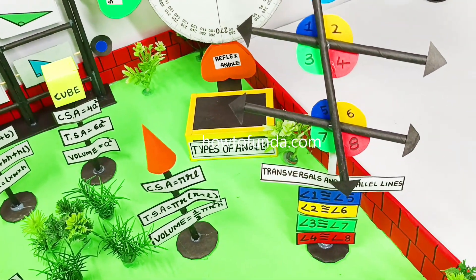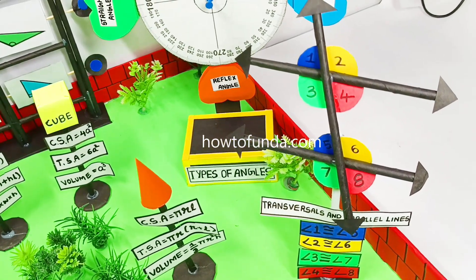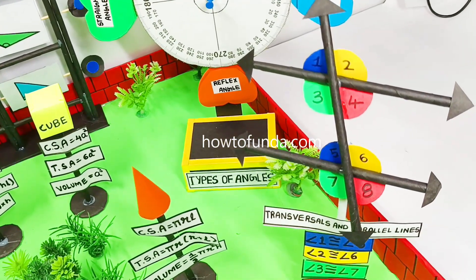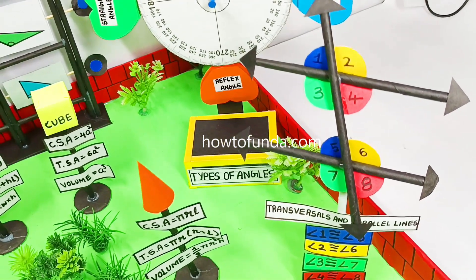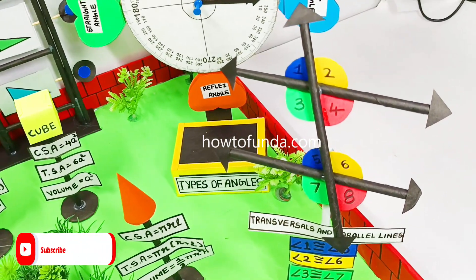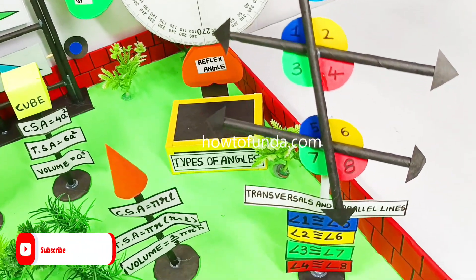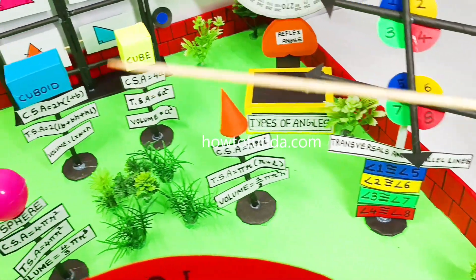The 4th and 8th angles are equal, 3rd and 7th are equal, 2nd and 6th are equal, and 1st and 5th are equal. That is what we wanted to depict in traversals and parallel lines.